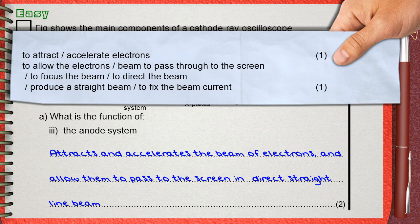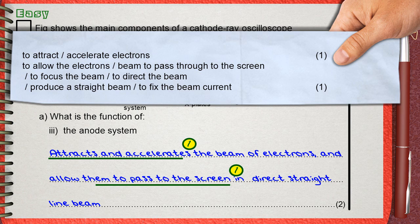Two marks in the mark scheme. The first mark is for to attract and accelerate electrons. This is what we said here. The second mark is to say that to allow the electrons or the beam of electrons to pass through to the screen. You can say to focus the beam, to direct the beam, or produce a straight line beam. You can also say to fix the beam current. Any one of these is for the other mark. We mentioned here that allow them to pass to the screen. Now we got the two marks of the question.